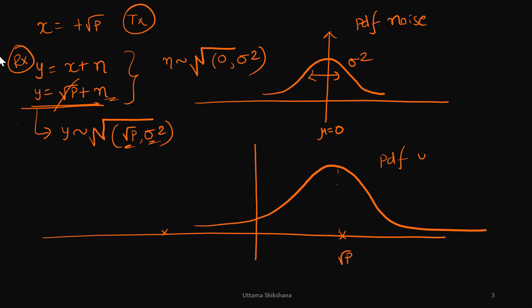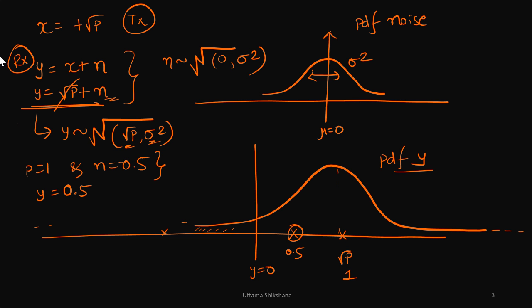The PDF of y looks like a Gaussian centered at square root of P, and it extends to infinity on either side, going beyond y equals 0. To find the decision boundary intuitively: let's say P equals 1 and noise equals 0.5, then y equals 1.5. If noise is minus 0.5, then y equals 0.5. So the received y lies somewhere at 0.5.